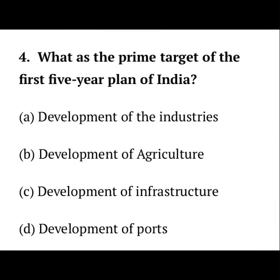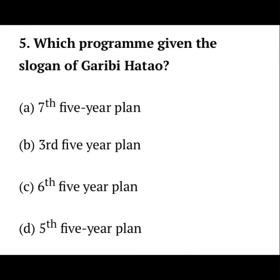What was the prime target of the first Five-Year Plan of India? After the Planning Commission was set up and the Five-Year Plans started, what was the main objective of the first plan? Options are: development of industries, development of agriculture, development of infrastructure, or development of ports. Let me know the answer in the comment section — you'll get the answers in the next video.